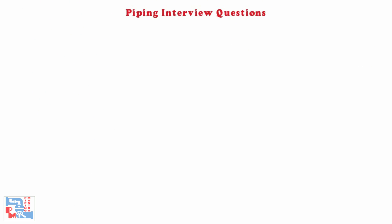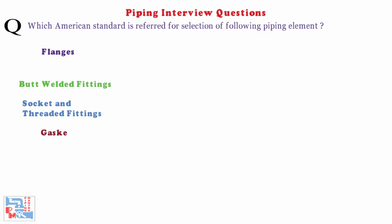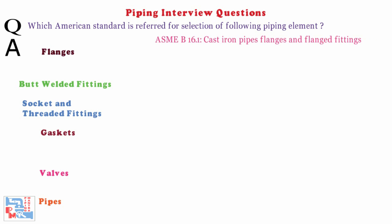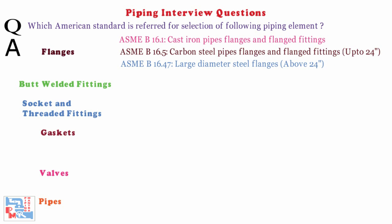Next: which American standards are referred to for selection of piping elements — flanges, butt welded fittings, socket and threaded fittings, gaskets, valves, and pipes? For flanges: ASME B16.1 is for cast iron pipe flanged fittings. ASME B16.5 is for carbon steel pipe flanges and flanged fittings up to 24 inch. ASME B16.47 is for large diameter steel flanges above 24 inch.